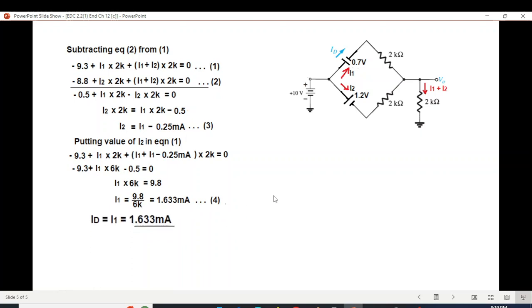And now since I1 and ID are same, the question is asked to find ID. Therefore ID is equal to I1 is equal to 1.633 milliampere. So the first answer we have found.